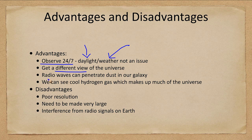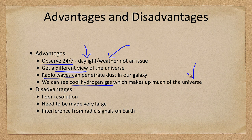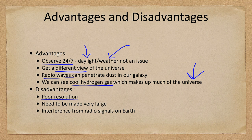As mentioned, radio astronomy offers a different view of the universe. Radio waves can also penetrate dust, giving us a view of different parts of our galaxy. We can see the galactic center in radio waves but not in visible light. And the cool hydrogen gas, which makes up much of the universe, is something else we can see in radio waves that we do not see in visible light.